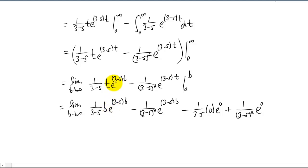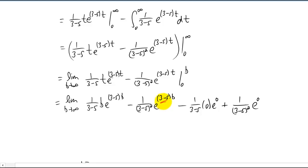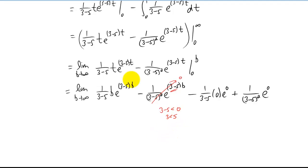Now we need to take these limits. Since we have an exponential here and an exponential here, this limit is either going to go to infinity or it's going to go to zero, depending on whether that exponent is positive or negative. We're not interested in a Laplace transform that doesn't exist, so we're going to say that three minus s has to be negative — meaning s is greater than three. The limit of the other term is also going to be zero, which requires s greater than three as well, and we had to use L'Hôpital's rule to do that limit.